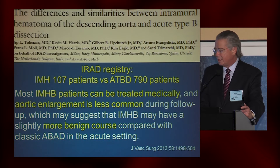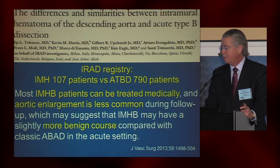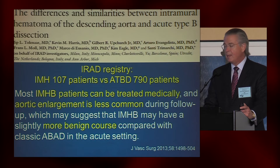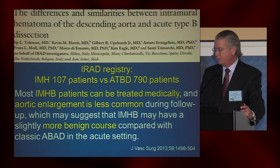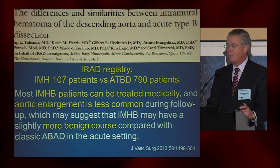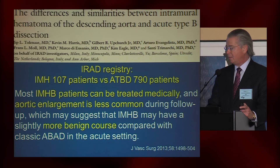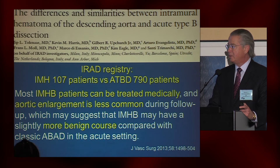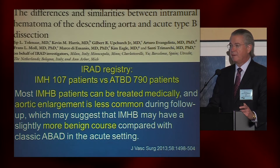Looking at the IRAT registry, they reported on 107 patients with intramural hematoma. The conclusion was that most of these patients can be treated medically, aortic enlargement is less common, and the process has much fewer complications compared to aortic dissection — defining what they call a more benign course.